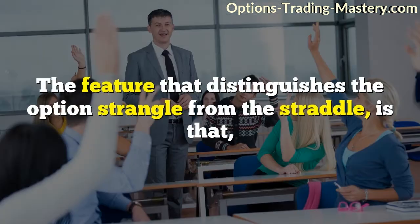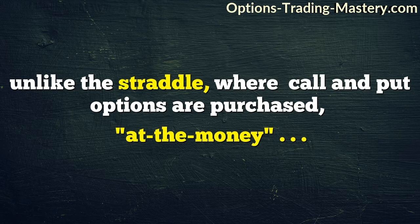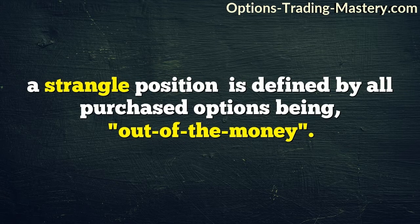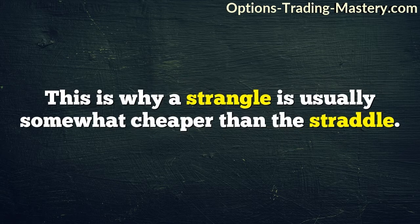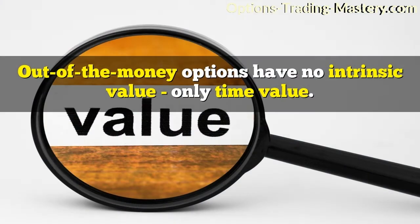The feature that distinguishes the option strangle from the straddle is that, unlike the straddle where call and put options are purchased at the money, a strangle position is defined by all purchased options being out of the money. This is why a strangle is usually somewhat cheaper than the straddle — out of the money options have no intrinsic value, only time value.